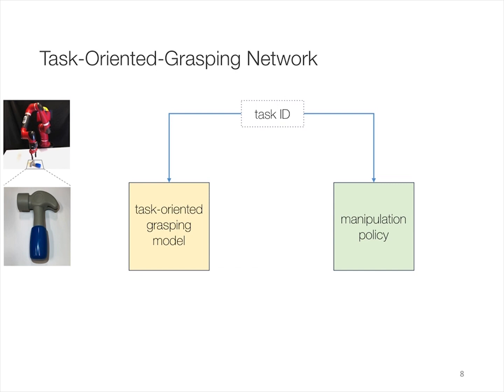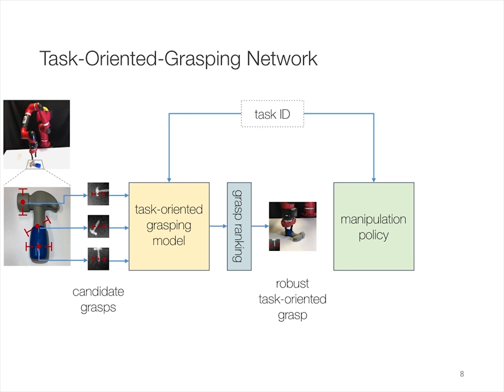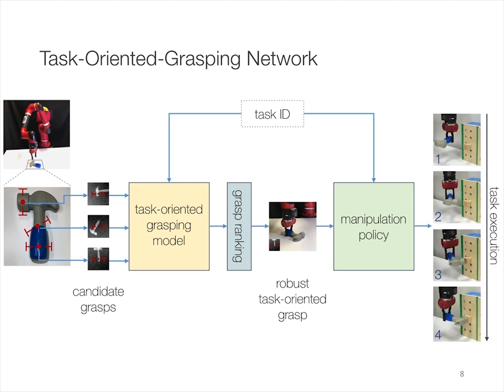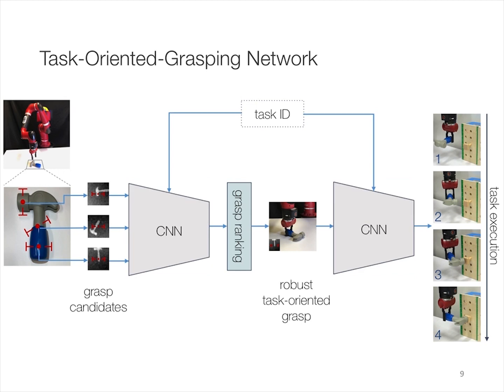Based on previous works including GQCNN, we propose a task-oriented grasping network composed of a task-oriented grasping model and the manipulation policy. Given the visual inputs of the object, we sample multiple candidate grasps. Depending on the task ID, the task-oriented grasping model predicts task success probability for each candidate and chooses the grasp with the highest predicted value. Then the manipulation policy outputs actions for the selected grasp. We use convolutional neural networks for both modules, and the network takes crops of the depth images of each grasp candidate as inputs.